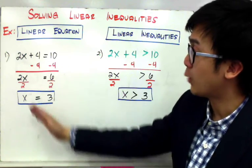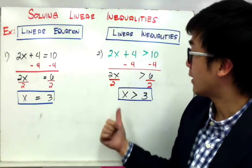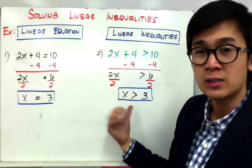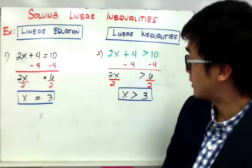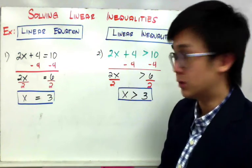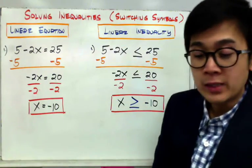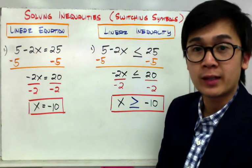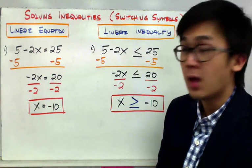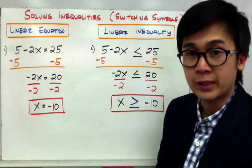Since in the equation x is equal to 3, and in the linear inequality x is greater than 3, the steps we work on are the same — it's just that now we're using an inequality symbol. One special step in solving linear inequalities is switching the symbol, from less than to greater than, or from greater than or equal to, to less than or equal to.